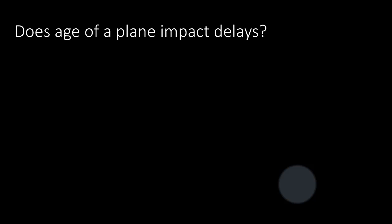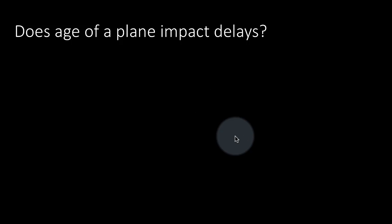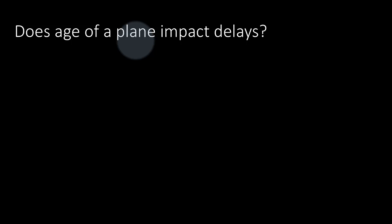Another question we may have is: does the age of a plane impact delays? The age of a plane is derived from the year in which it was manufactured. The planes table has a tail number for every plane and also the year of manufacture. This is unlikely to matter because airlines would have planned departure and arrival times based on the plane's characteristics, but it's worth examining — and it's a good example of joining, since the age comes from the planes table and the delay information is in the flights table.